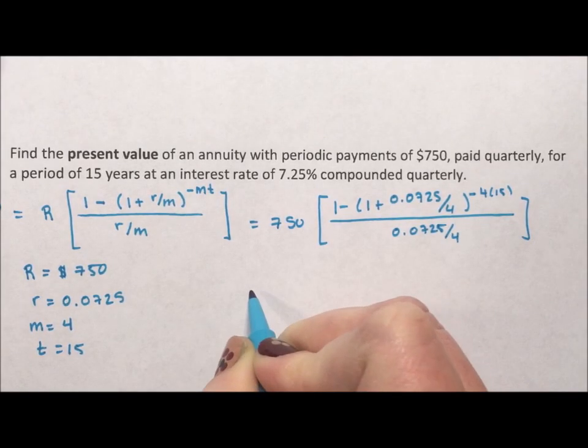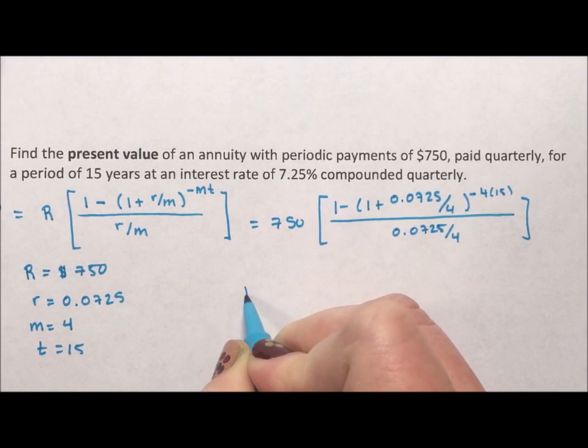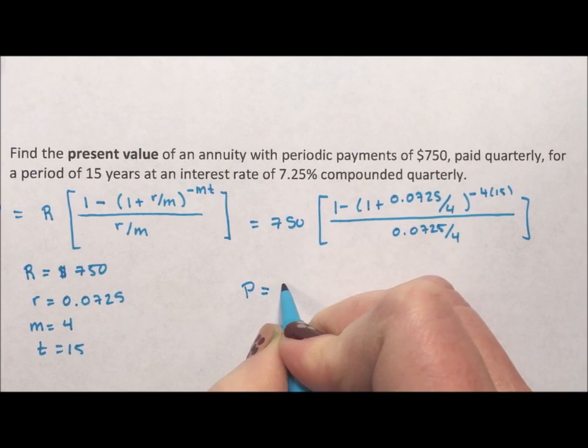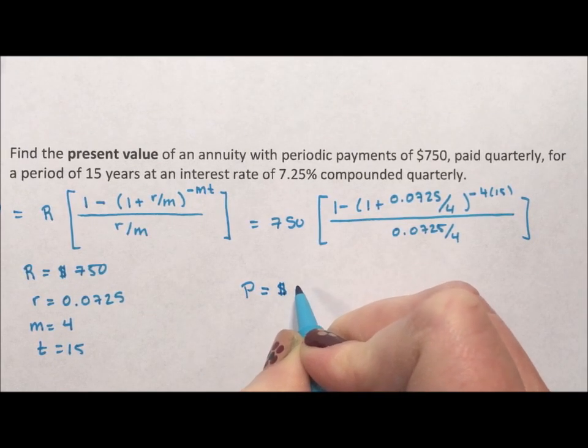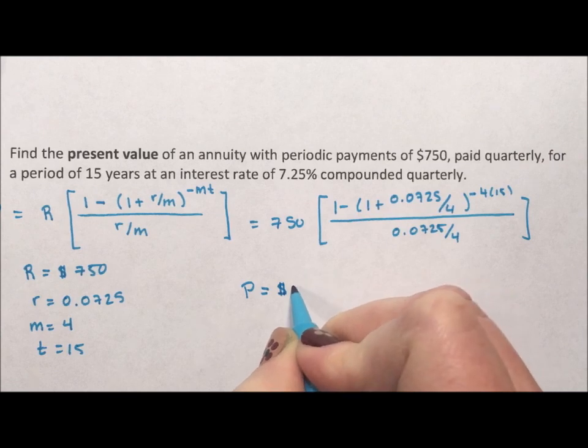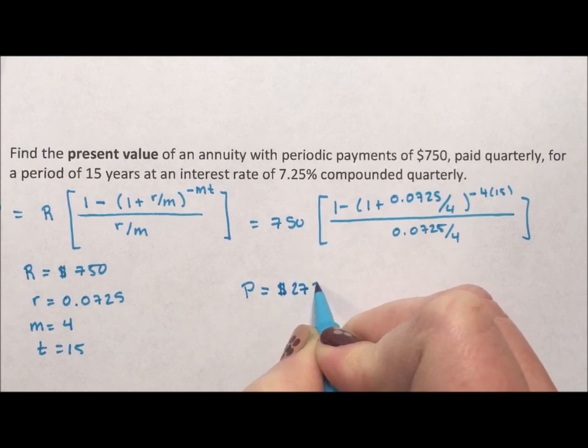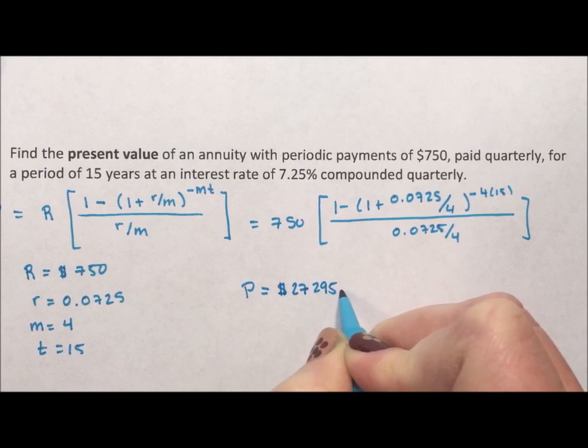And when we throw this into the calculator, we find out what the loan we took out was, what it was valued at today is $27,295.60.